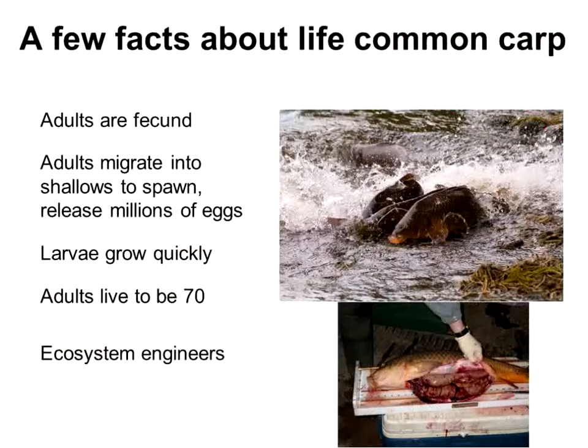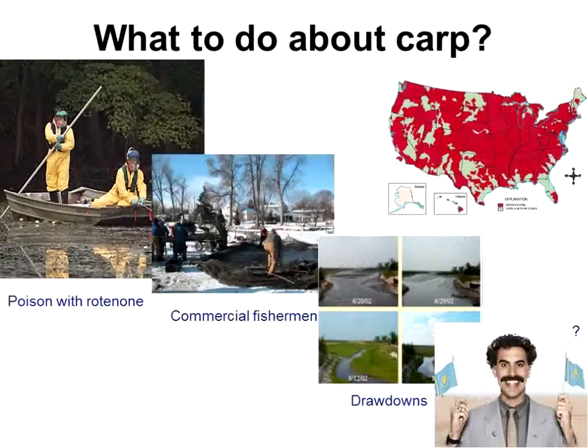Common carp can be tremendously damaging. They feed on the bottom and have been doing this for a hundred years. Most people don't even realize the extent of the damage — they uproot all the plants to get at the insects. Common carp are extremely fecund, like Asian carp, producing maybe several million eggs per female. They migrate into shallows to spawn, eggs and larvae grow very quickly, and they live up to 70 years old, with a hugely devastating effect in which they rework entire ecosystems.